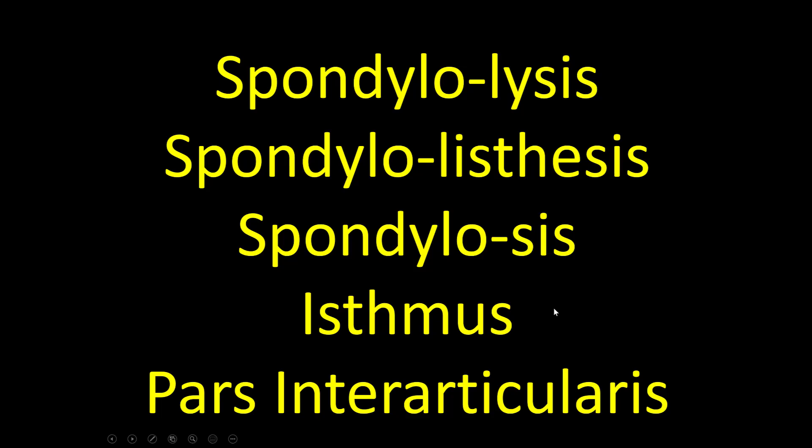So spondylolysis — it's a complicated word. Spondylo means spine. Lysis means pulled apart or fractured. Spondylolisthesis: spondylo means spine again, and listhesis means sliding — the bones are sliding. Spondylosis: spondylo means spine and the suffix just means something's wrong with it. Isthmus we're going to go over, and pars articularis is the place between two joints.